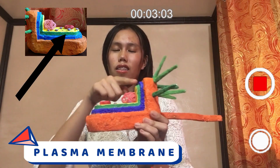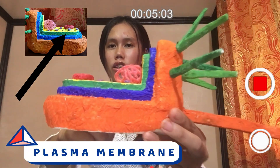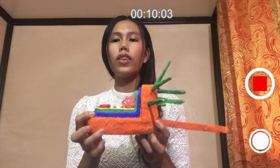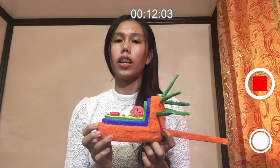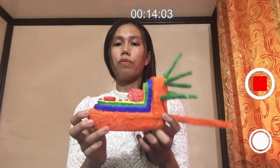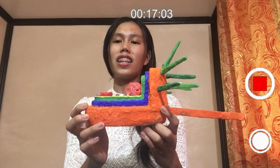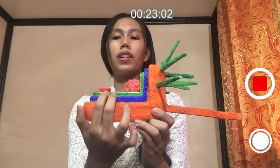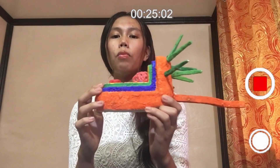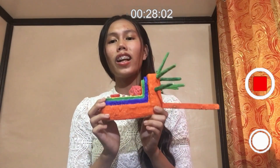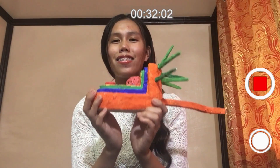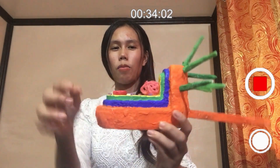Next is the plasma membrane — this green layer over here is what we call the plasma membrane. It is also known as the cell membrane. It is mainly composed of proteins, phospholipids, and carbohydrates, which form a fluid mosaic. The plasma membrane surrounds the bacteria and is the most important organelle, playing a vital role in controlling the movement of substances in and out of the cell.